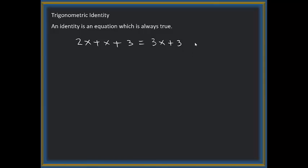For example, when x = 1, the left side gives 2 + 1 + 3 = 6, and the right side is also 3 + 3 = 6. If x = 0, the left side gives 2 times 0 plus 0 plus 3, which is 3, and the right side is also 3. These types of equations are called identities.